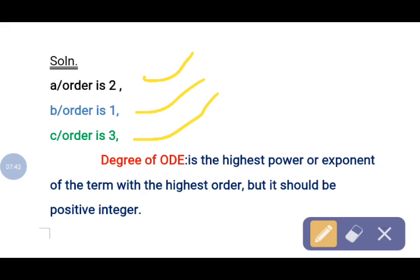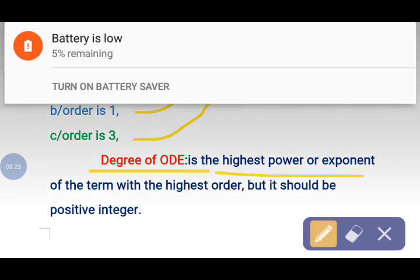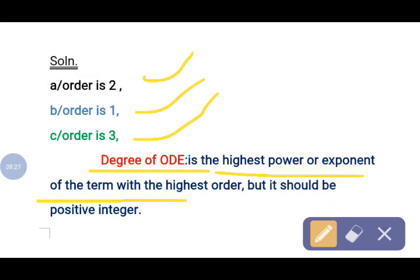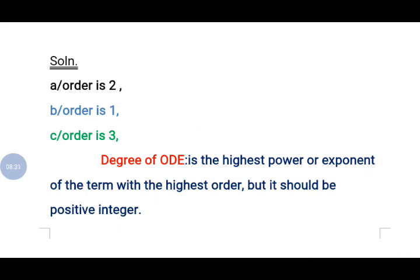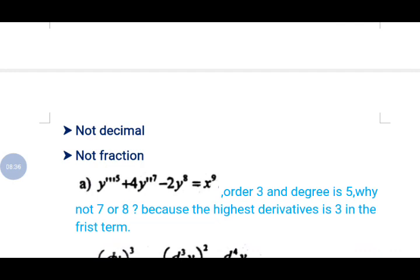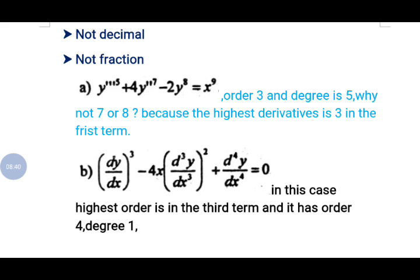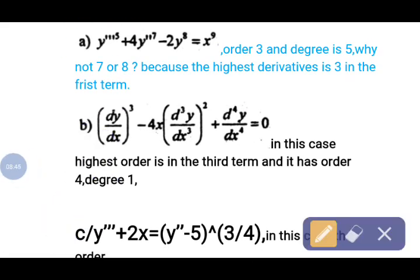What is the degree of an ordinary differential equation? Before finding the degree, we should first identify the order. The degree of an ordinary differential equation is the highest power or exponent of the term with the highest order derivative, but it must be a positive integer — not a decimal, not a fraction. Now let us solve some examples of order and degree of ordinary differential equations.